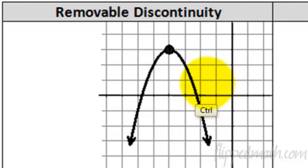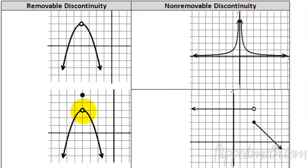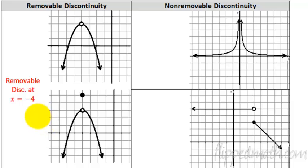So that here — scrolling down — this is also removable because if we plugged in that hole, it would be continuous. We call this a removable discontinuity at x equals negative 4. The x value is negative 4, and so that's how we classify this.